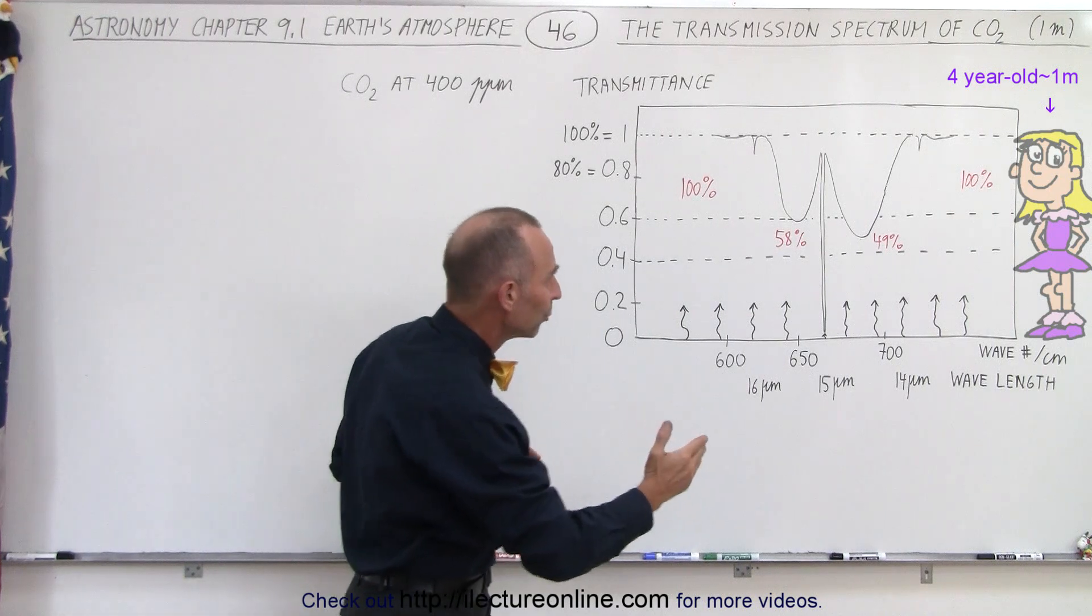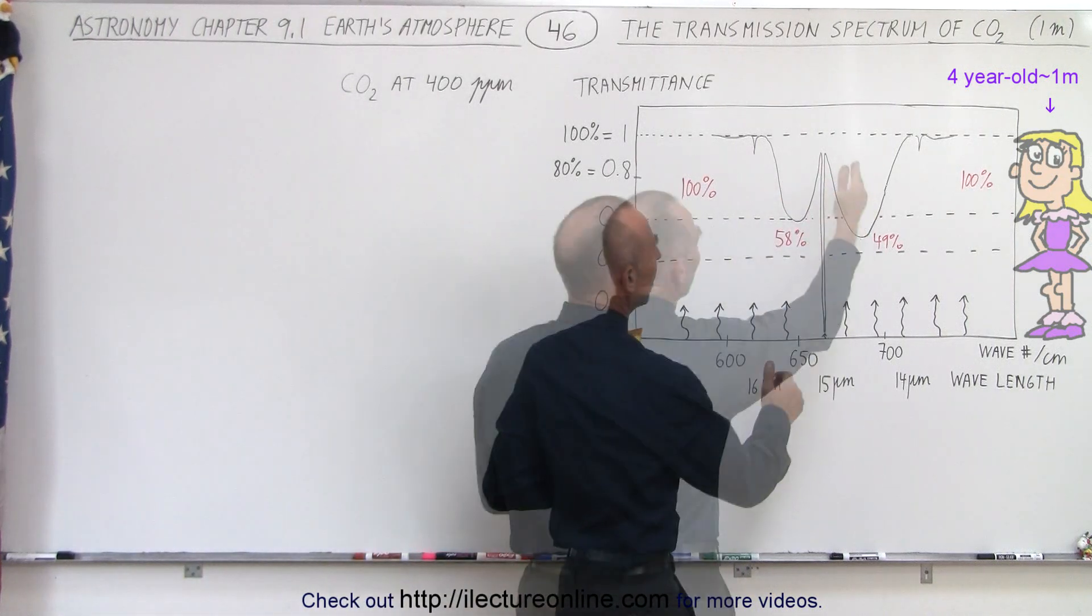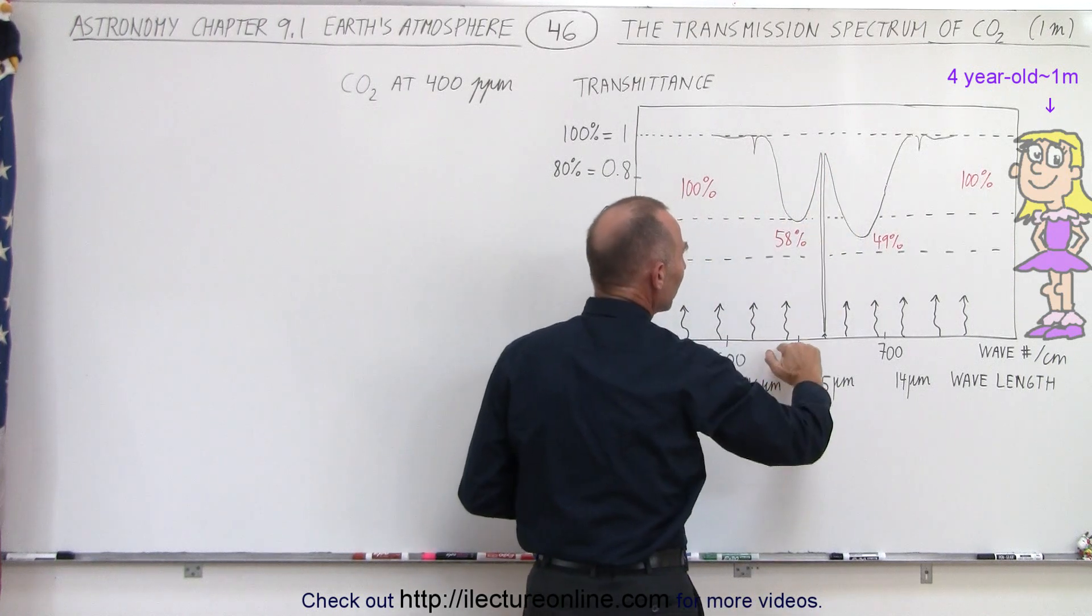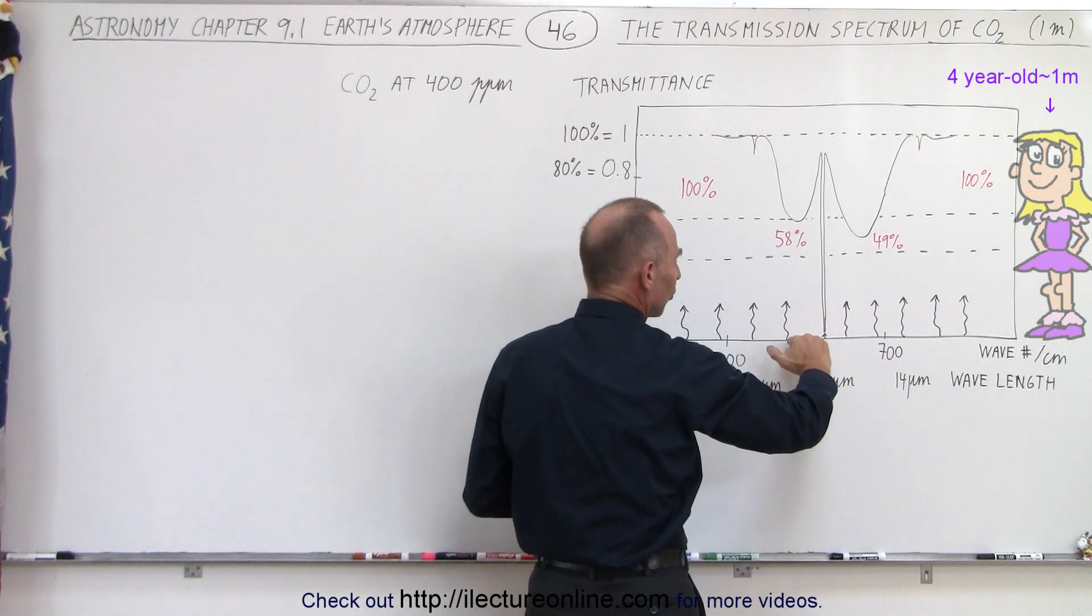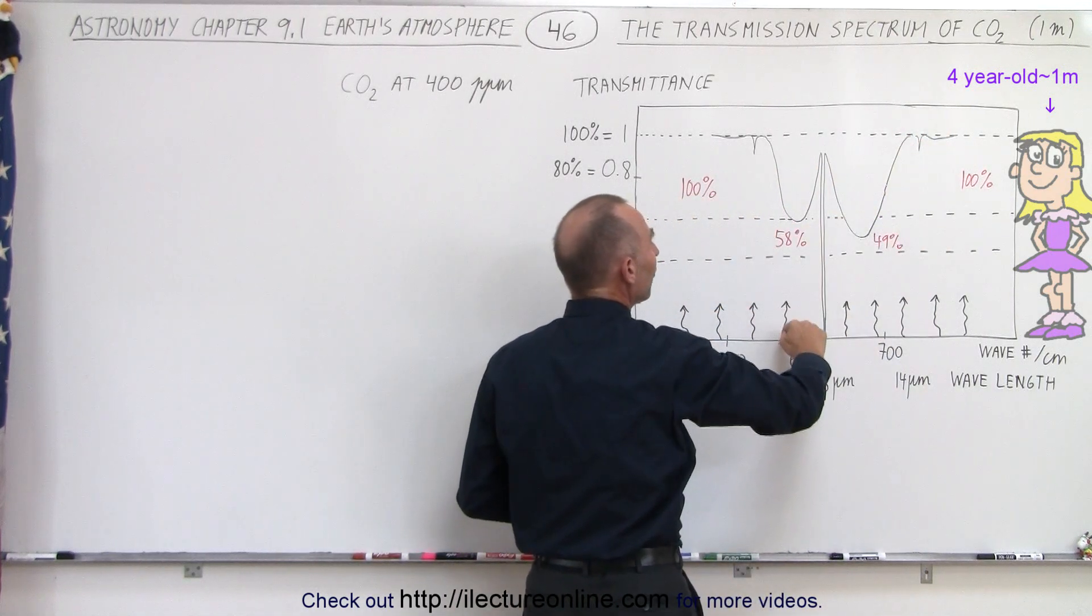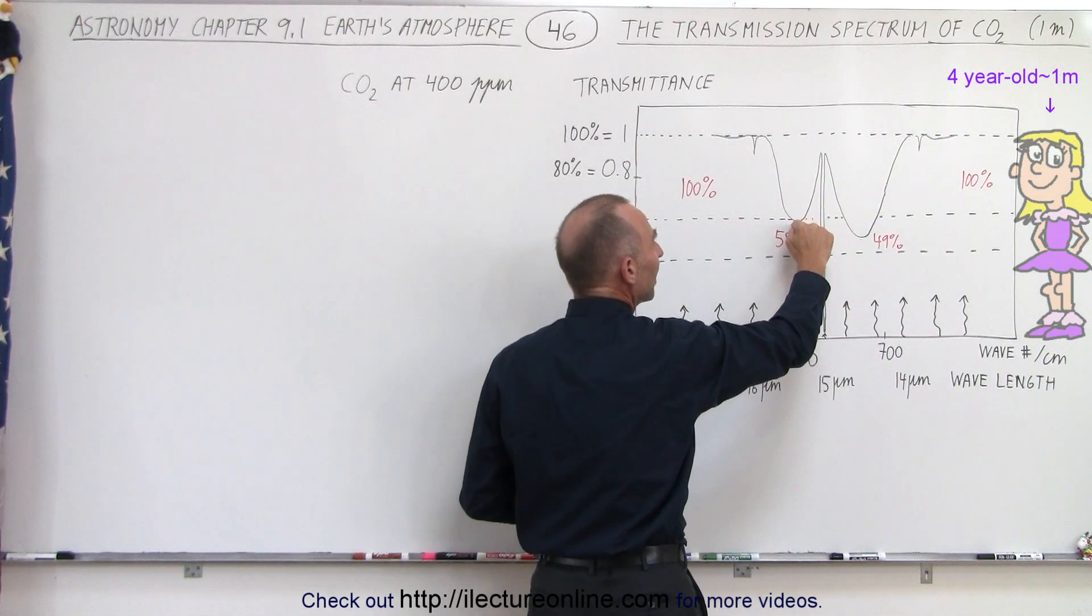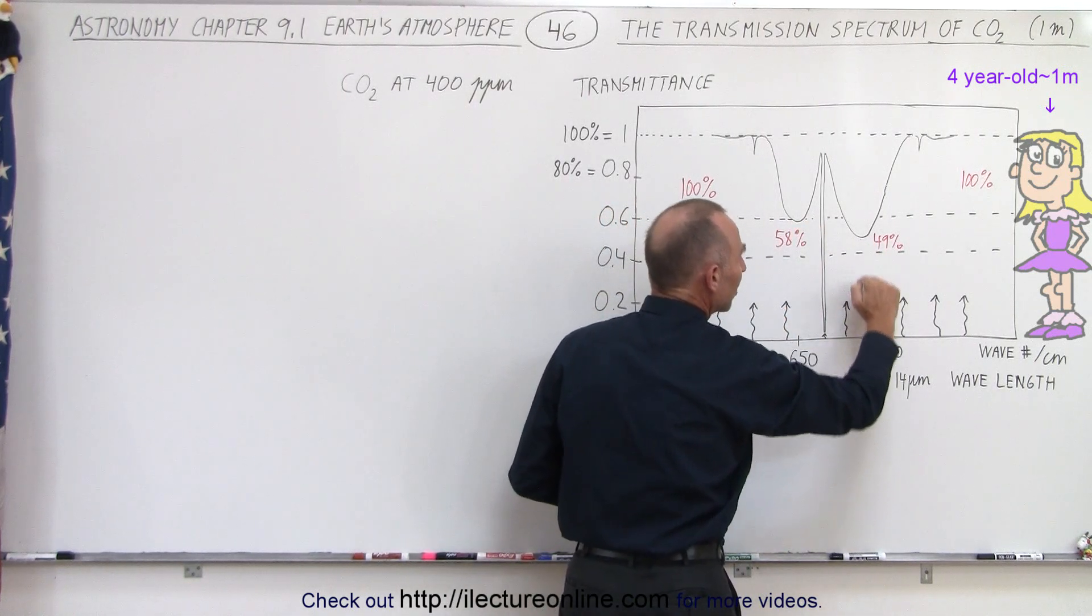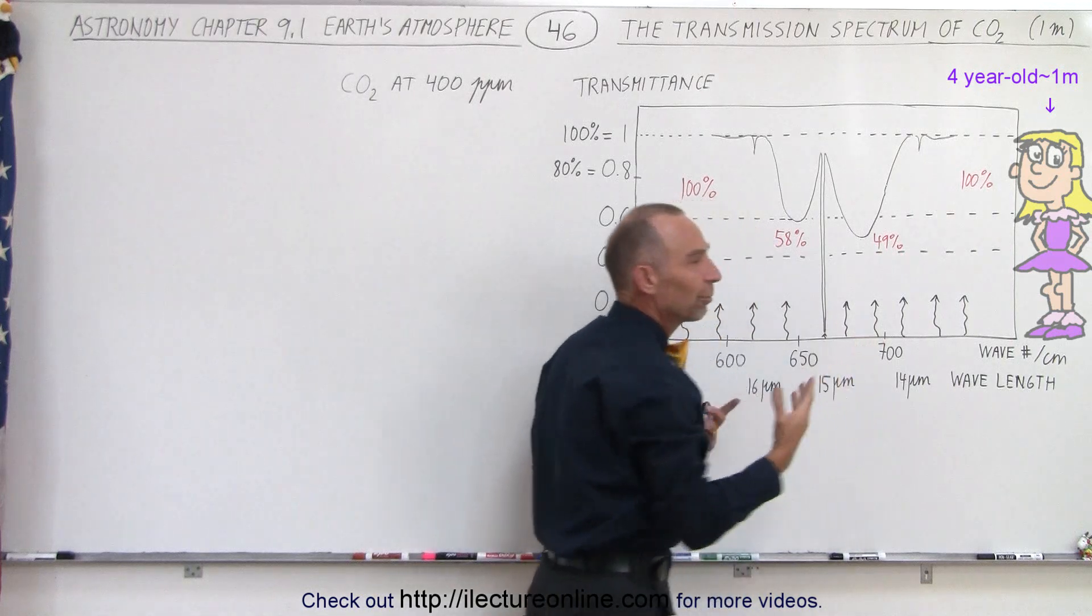Now, to the side of that, we have the two side lobes. We have the P branch and we have the R branch and you can see by the time the radiation from the surface reaches a height of one meter, and that's what we have indicated over there at one meter, 58% of the radiation makes it that high on the left side here, and 49% of the radiation makes it that high, the rest of it is absorbed.